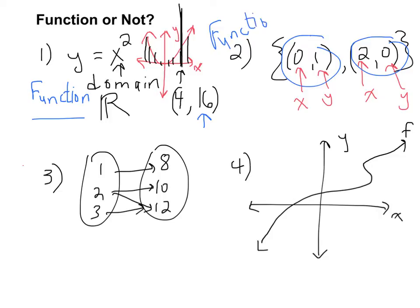Alright, maybe now you're thinking, okay, well, what would it look like if it wasn't a function? Well, let's say we added a third ordered pair to this set, and we had 0, 3. If that was in the set, this would not be a function, because 0 would no longer have exactly one output.